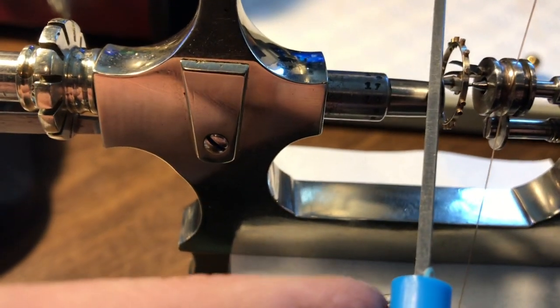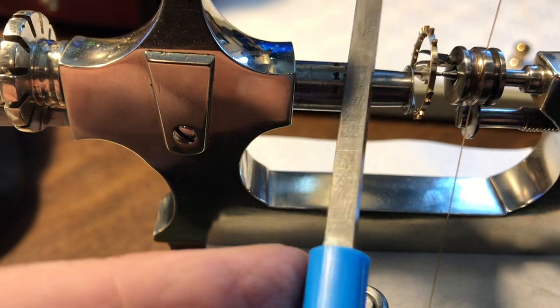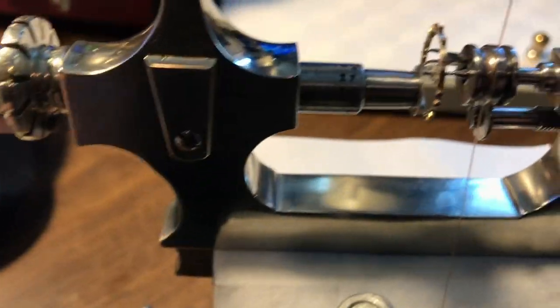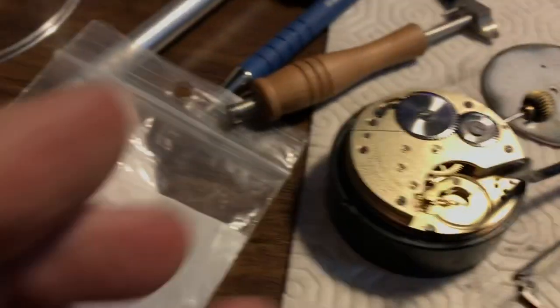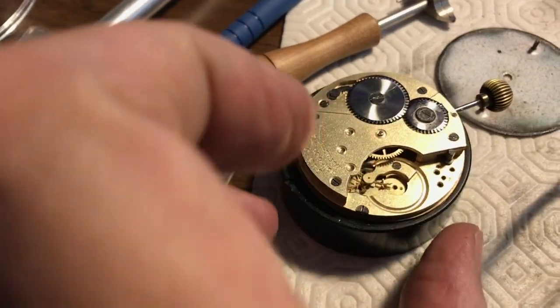That's just pure steel on the end and that just smoothens the pivot to finalize it. When I've finalized it I will put it back into the movement I have here and reattach the hairspring and away we go.